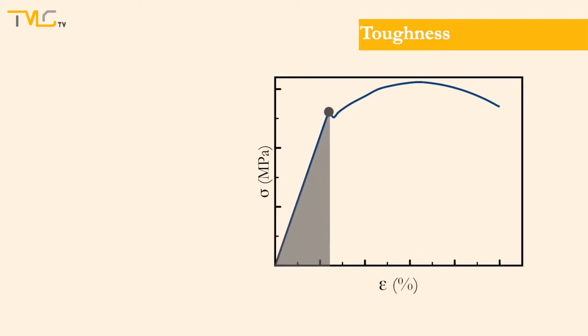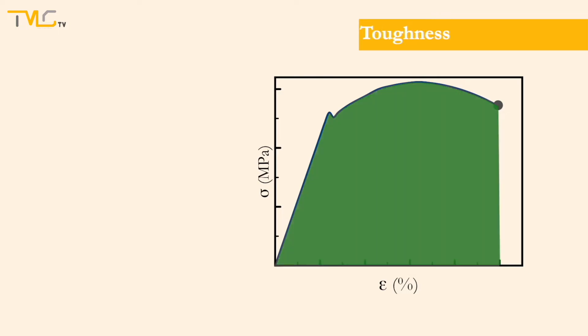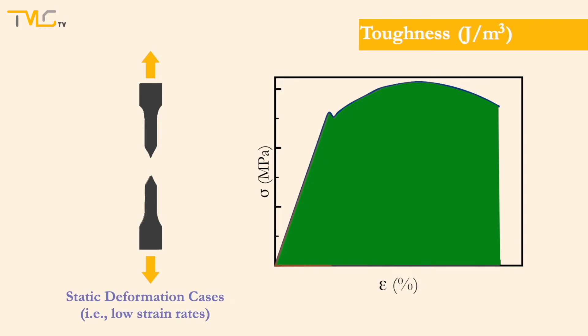Toughness is the ability of a material to absorb energy during deformation until fracture, which is mathematically equal to the area under the stress-strain curve and is reported in joules per meter cubed. It should be noted here that this is valid for static deformation cases, meaning low strain rates.